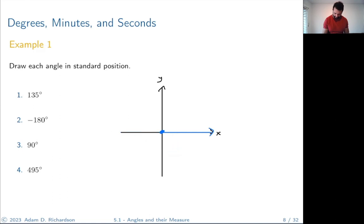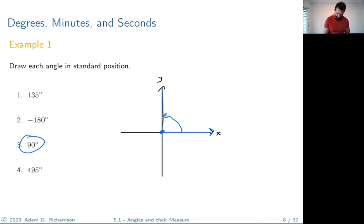Now let's do 90 degrees. It's a positive angle so we go in the counterclockwise direction, right up to this line here. That's 90 degrees — another standard angle you want to memorize that we'll use a lot.